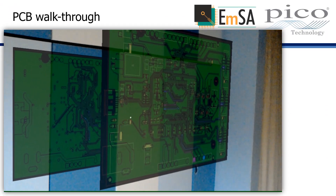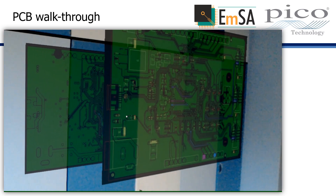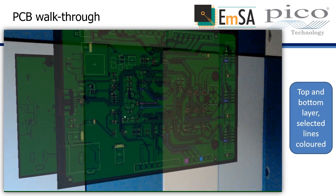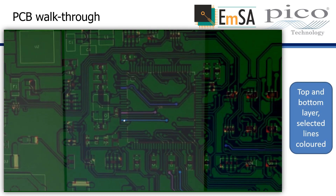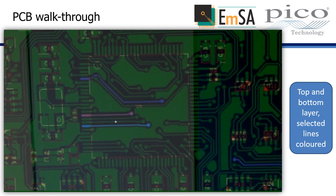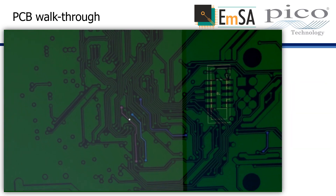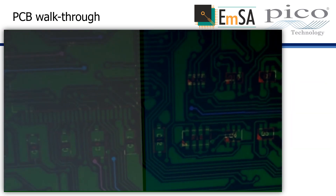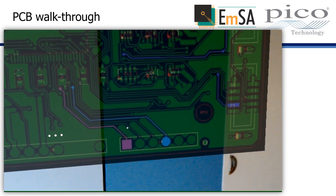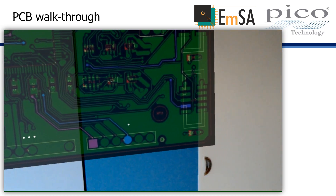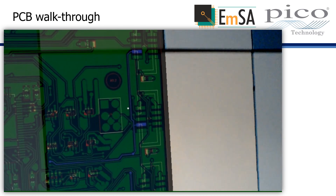This video was recorded with the Microsoft HoloLens. It illustrates how you could walk through the layers of a PCB. In this example we have a top and a bottom layer. The colors blue and purple are used to highlight two nets on this board.